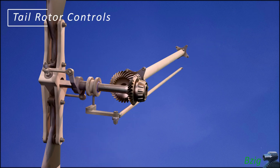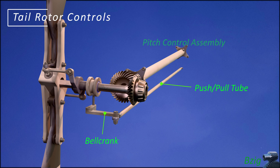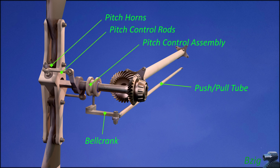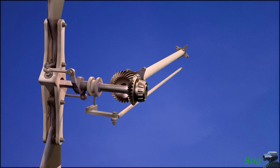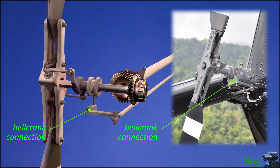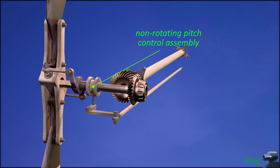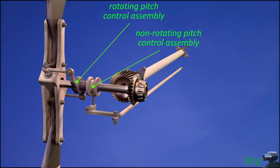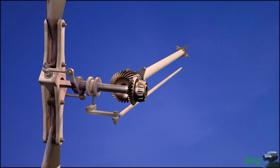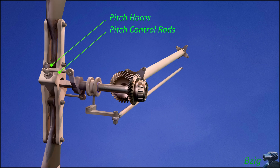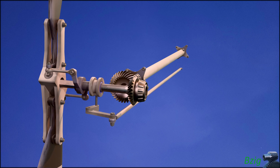There's more to the tail rotor control system than what's on the screen — this is a work in progress. For today I'm showing a push-pull tube, a bell crank, the pitch control assembly, the pitch control rods, and the pitch change horns on the blades. When the pilot actuates the tail rotor pedals, the long pushrod moves and in turn actuates the tail rotor bell crank. The bell crank's pivot point is structurally connected to the tail rotor gearbox. Motion of the bell crank is transmitted to the non-rotating portion of the pitch control assembly, which is then passed to the rotating portion, and from there to the tail rotor blades via pitch control rods and pitch horns.